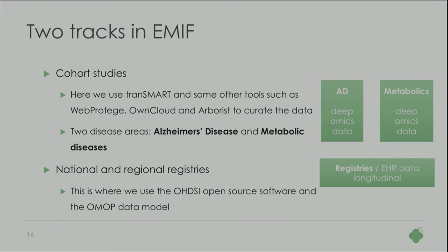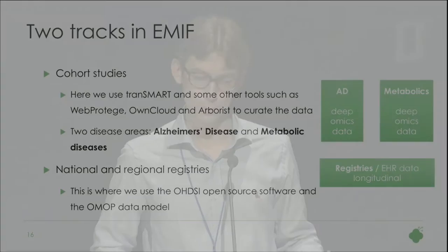In EMIF we really have two tracks: one track uses Transmart and the other uses OHDSI and OMOP. I'll tell you more about Transmart because that's what we're here for. Transmart is used in EMIF to collect all the data from the cohorts we have, for example on Alzheimer's disease. But it's not used in isolation — Transmart is the barrel of the data codes, but we also have, for example, ownCloud for the raw data files coming in, and a number of other tools around Transmart that help with data curation.